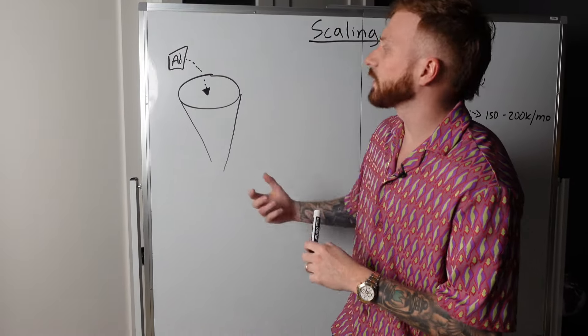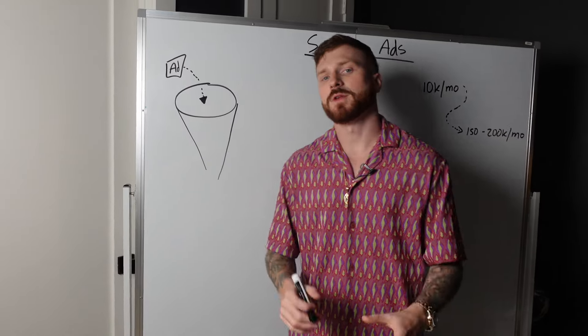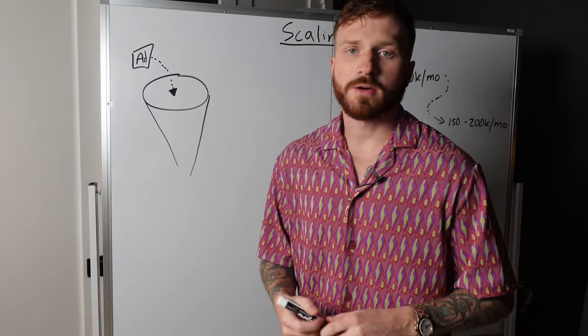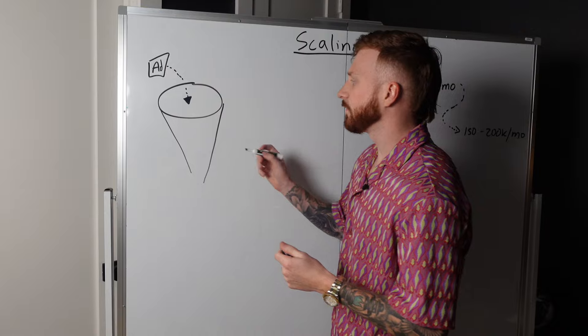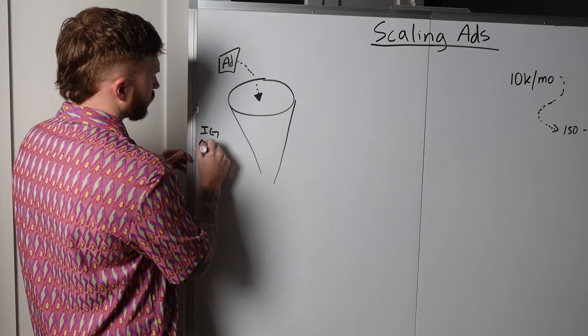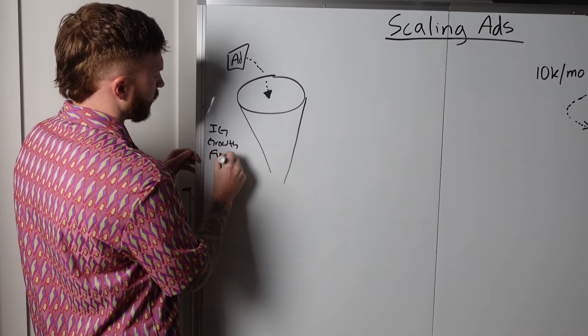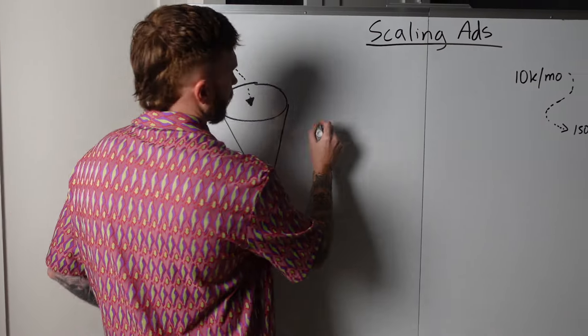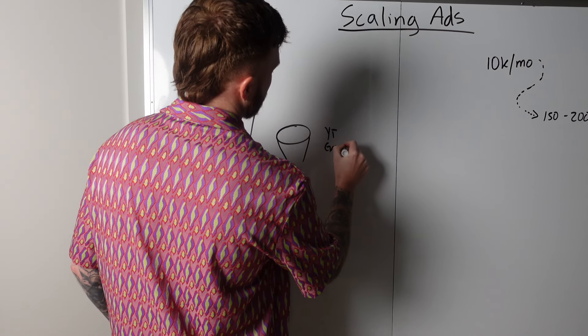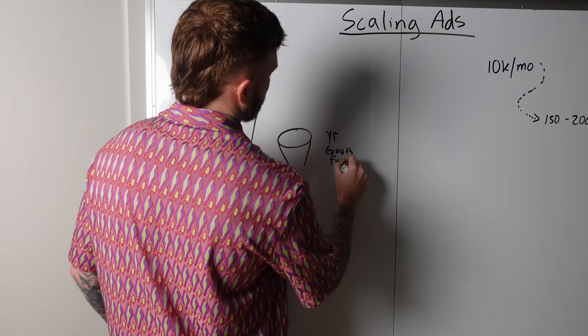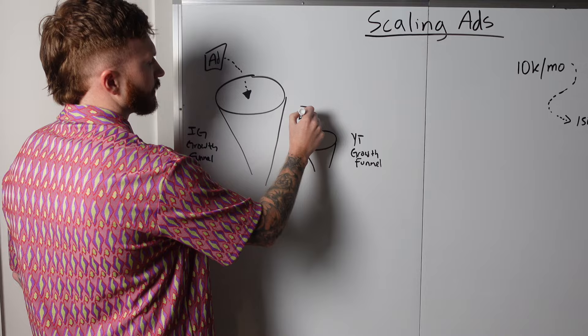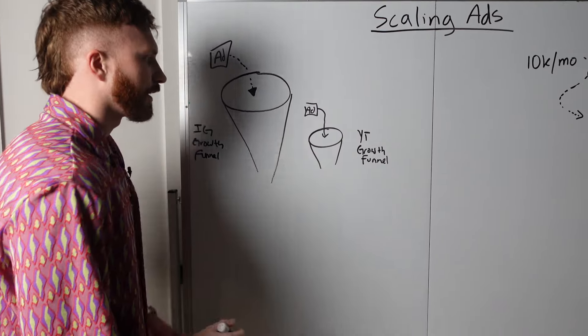So if you're going to scale ads, you have to know where you're going to send the ad traffic to. If you've followed me for any time at all, or if you're completely new here, we recommend really two funnels. We call this one our IG growth funnel. And then we have another funnel we recommend called the YouTube growth funnel, where we run ads on YouTube to get people interested in buying our stuff. And they then watch videos like this and decide to turn into customers.